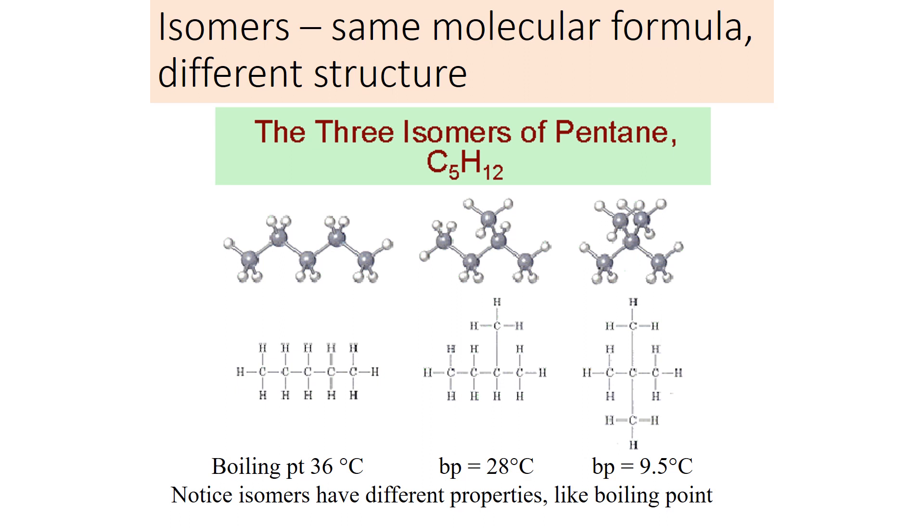Isomers are molecules that have the same formula but different structure. Consider the molecule C5H12. There are three different ways you can arrange those atoms.